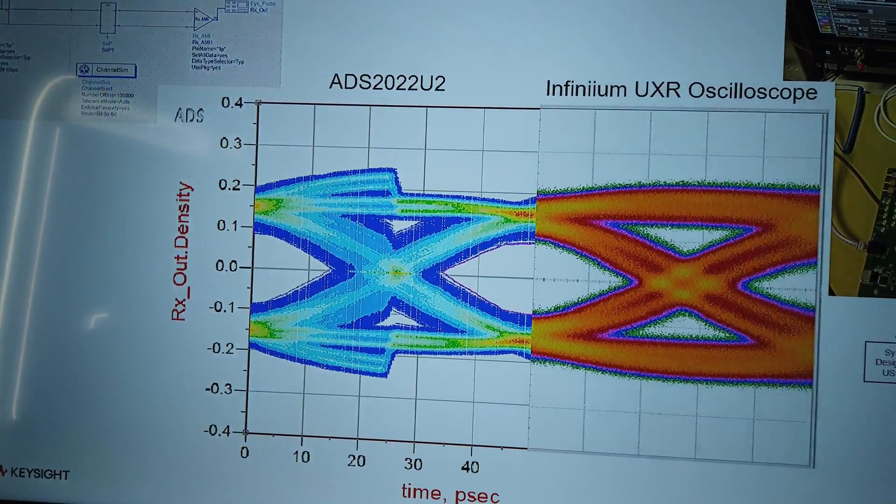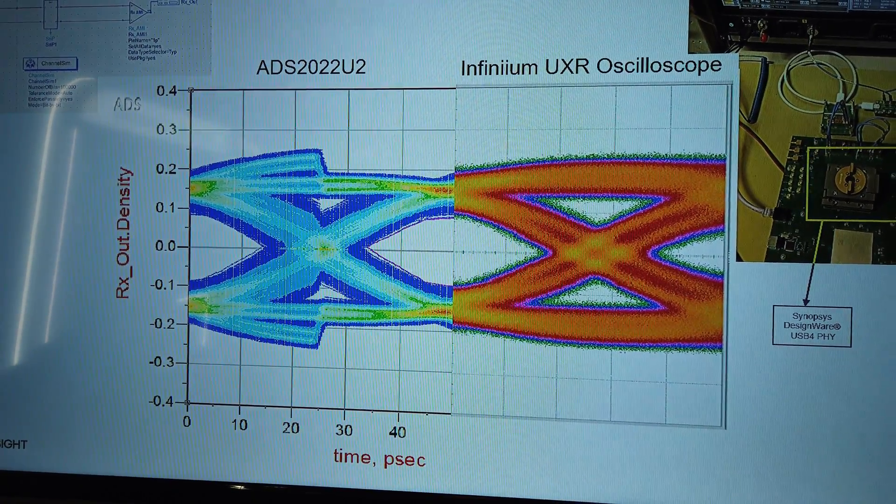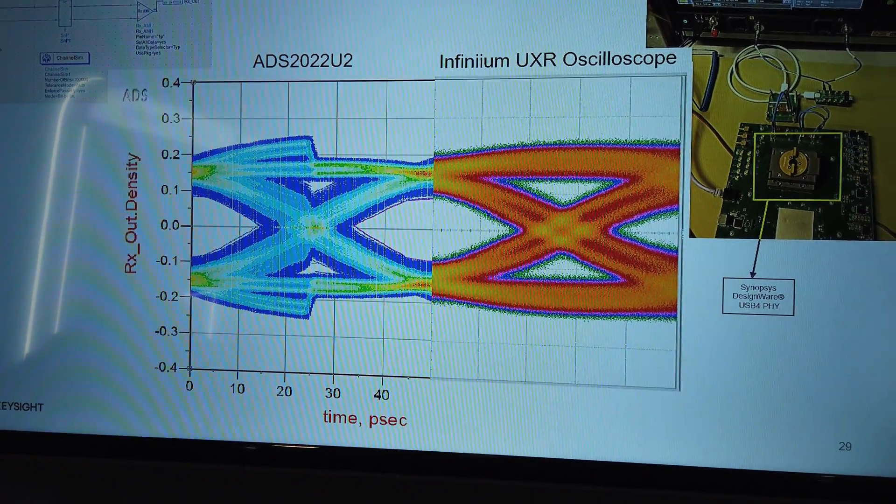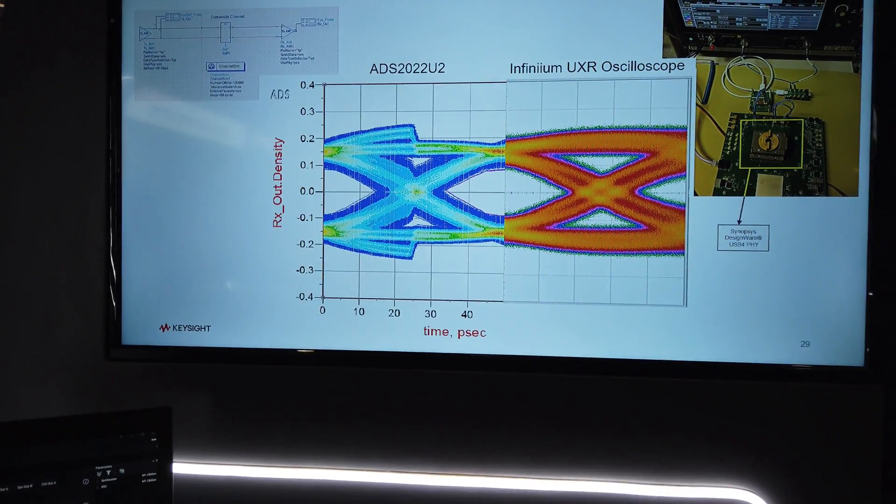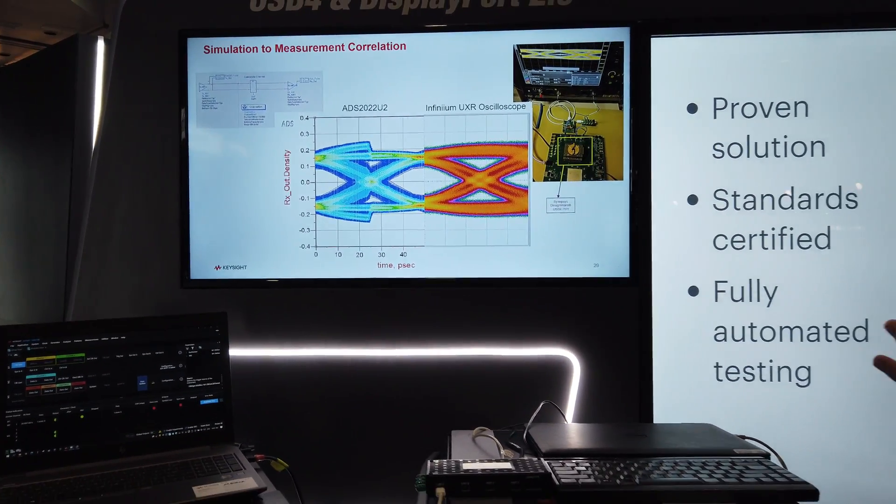And on the right, the measurements on a scope. You can see almost perfect correlation between the left simulation and the right. This is really a picture that shows the entire chain from design simulation all the way to measurements correlating.